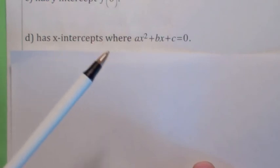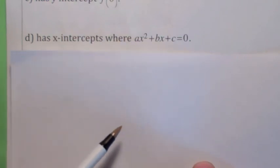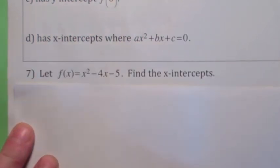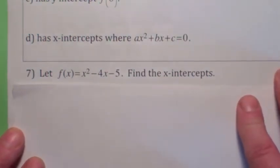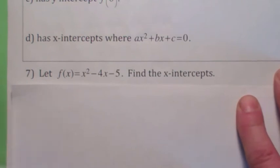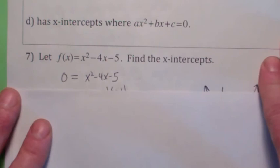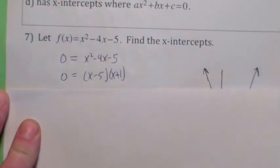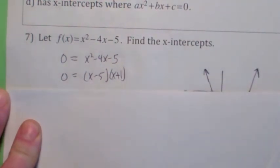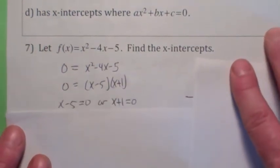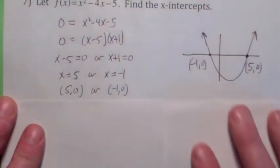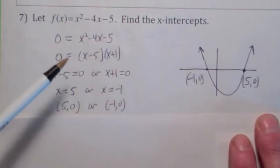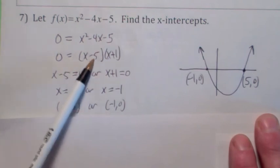A quadratic function can have two x-intercepts, one x-intercept, or no x-intercepts. If it has one x-intercept, that would have to be the vertex. To find x-intercepts, before jumping to the quadratic formula you should try to factor. Set y equal to 0, factor the expression, and in this example you get x-intercepts at 5 and negative 1. Graphically, the graph crosses the x-axis at (−1, 0) and (5, 0). When it's factored like that, you can find the x-intercepts easily.